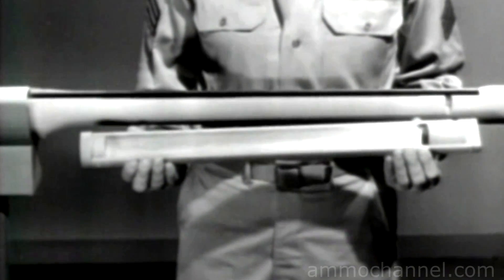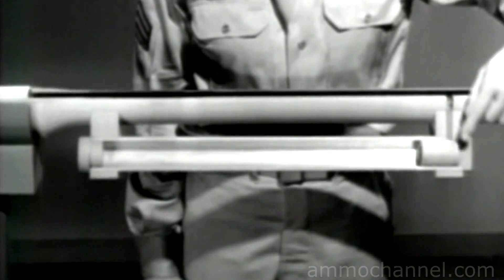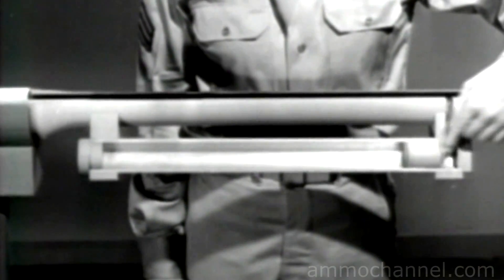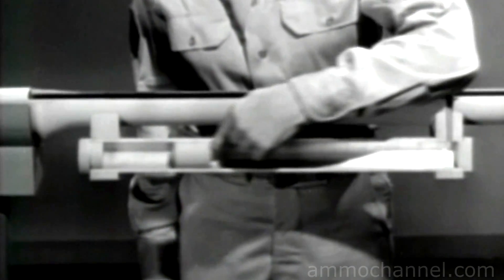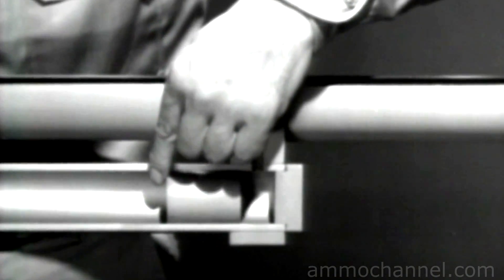To make use of this gas, we'll direct it into a gas cylinder. Inside the gas cylinder, there is a piston which can move back and forth. When the gas from the explosion escapes through the gas port, it strikes this piston and drives it to the rear.